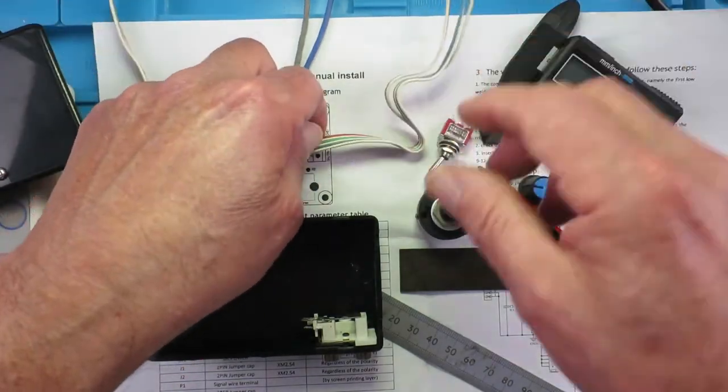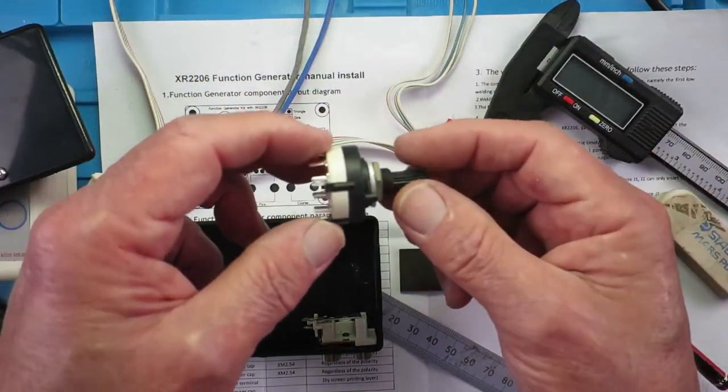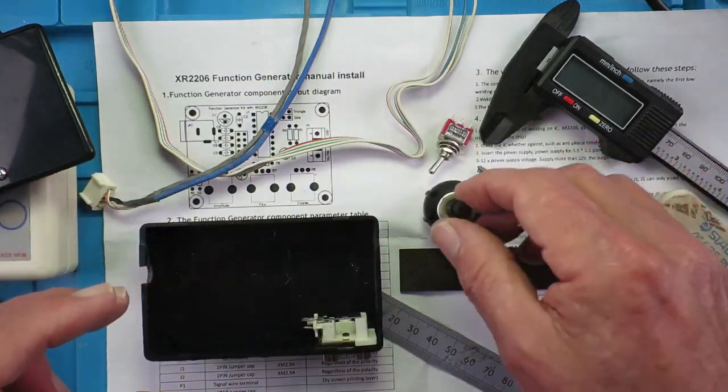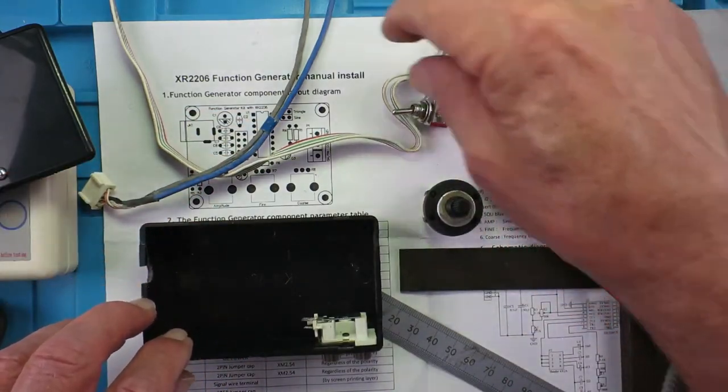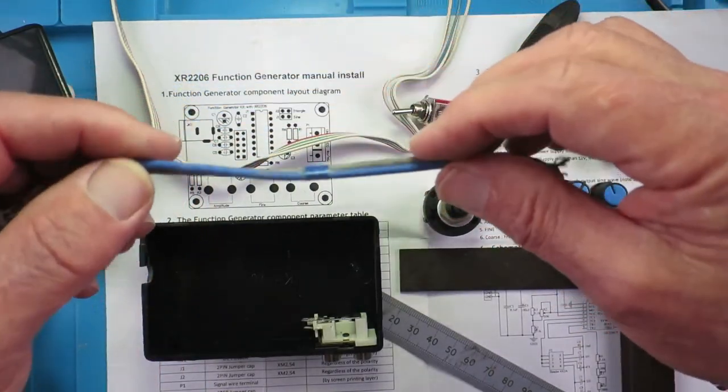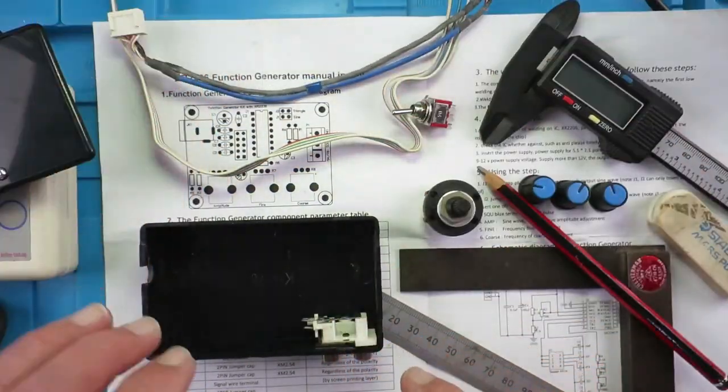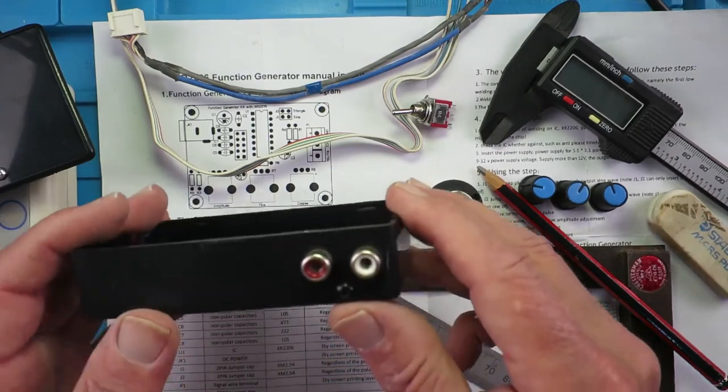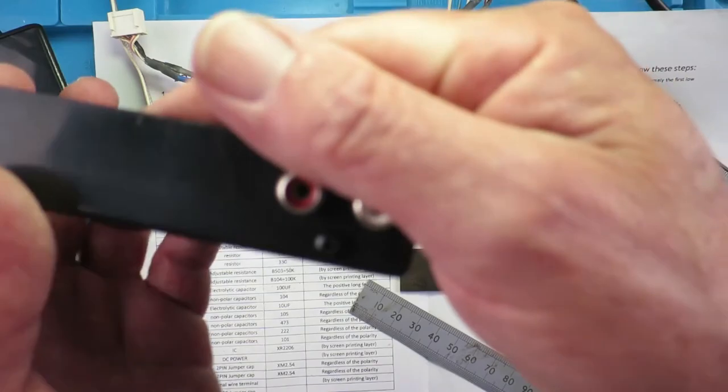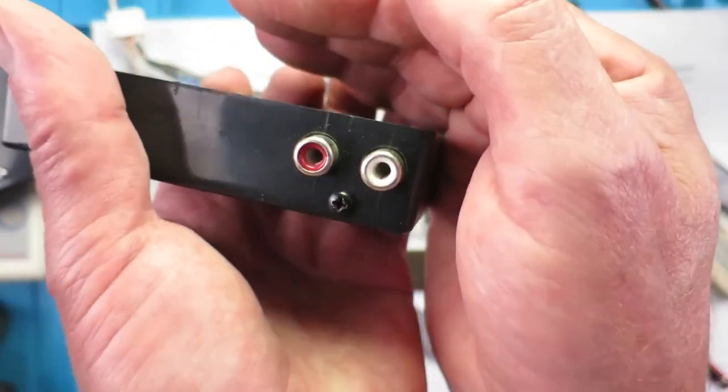So that's six ways, so that'll be enough to wire up our multi-way switch. And also the little switch for the triangle and sine selection. I've got some screened cable here, which will obviously connect up our phono connectors.